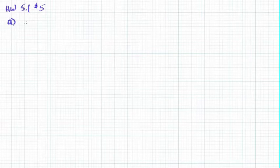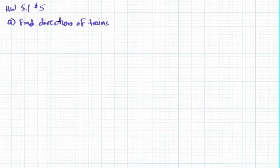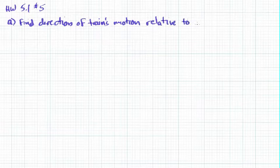This is going to be number five, parts A and B. The best way to do number five — first I need to change something. I'm going to write out part A right here: find the direction of the train's motion. I'm writing this out for a reason. It says relative to north, but we don't want that, because whenever we have any kind of angle we don't want it based off the vertical.